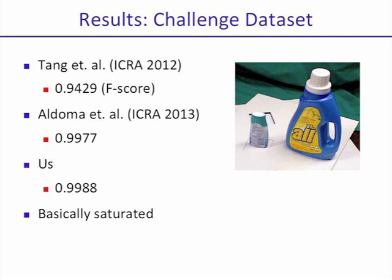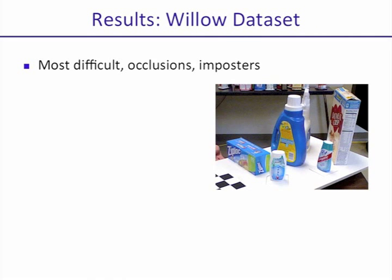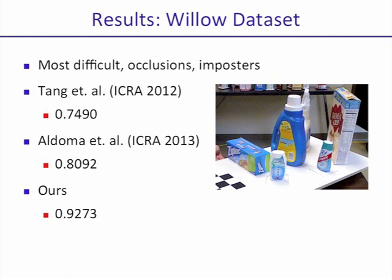Our one missing detection is a relatively specular Gillette bottle. We then consider the Willow dataset, which is the other dataset introduced as part of the 2011 challenge. The Willow dataset is much more difficult due to heavy occlusions — sometimes even full occlusions — as well as impostor objects such as the different flavor Odwalla bottles we previously saw. Tang et al. obtained an F-score of 0.749. Domo et al. brought this up to 0.8092. Our approach obtains an F-score of 0.9273, working significantly better for this dataset with occlusions and impostors, which is what originally motivated our multimodal blending approach.